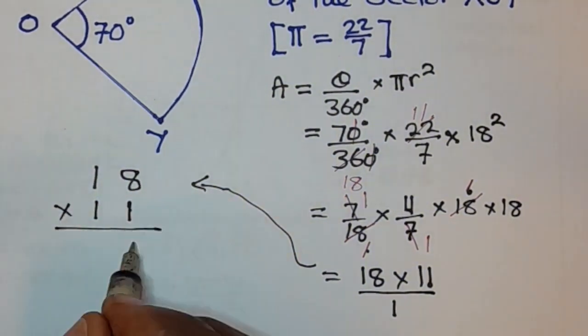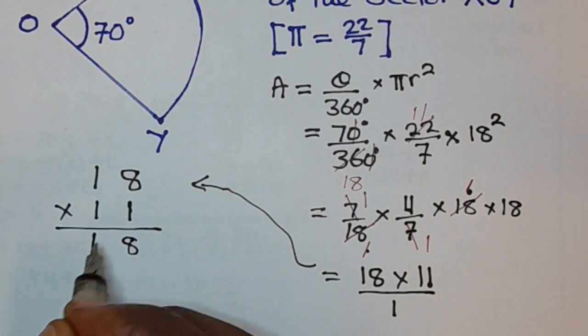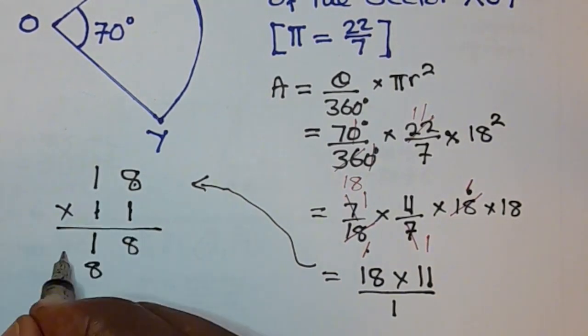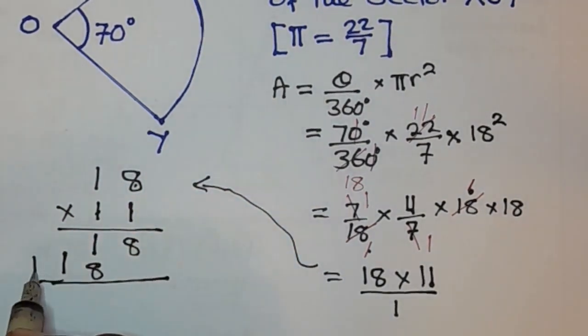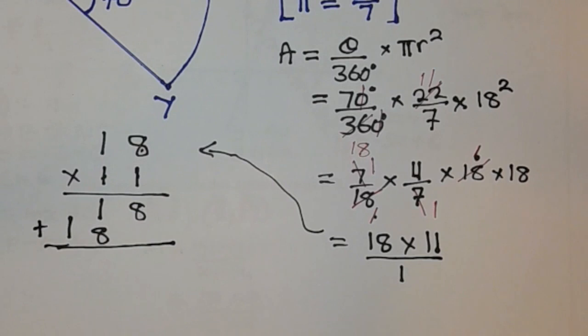So 1 times 8 is 8, 1 times 1 is 1, 1 times 8 is 8, 1 times 1 is 1. Then at this stage, you are adding 8 plus, here is same as 0, 8 plus 0 is just 8, 1 plus 8 is 9, then this is 1.